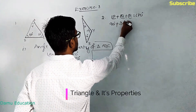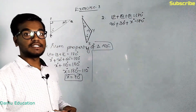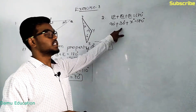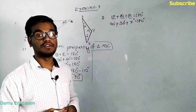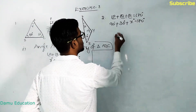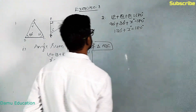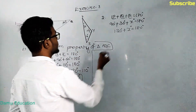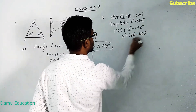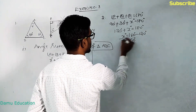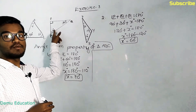So 90 plus 30 equals 120 degrees. Therefore 120 plus X equals 180 degrees, which means X is equal to 180 minus 120, giving us 60 degrees. To verify: 90 plus 60 is 150, and 150 plus 30 equals 180 degrees.